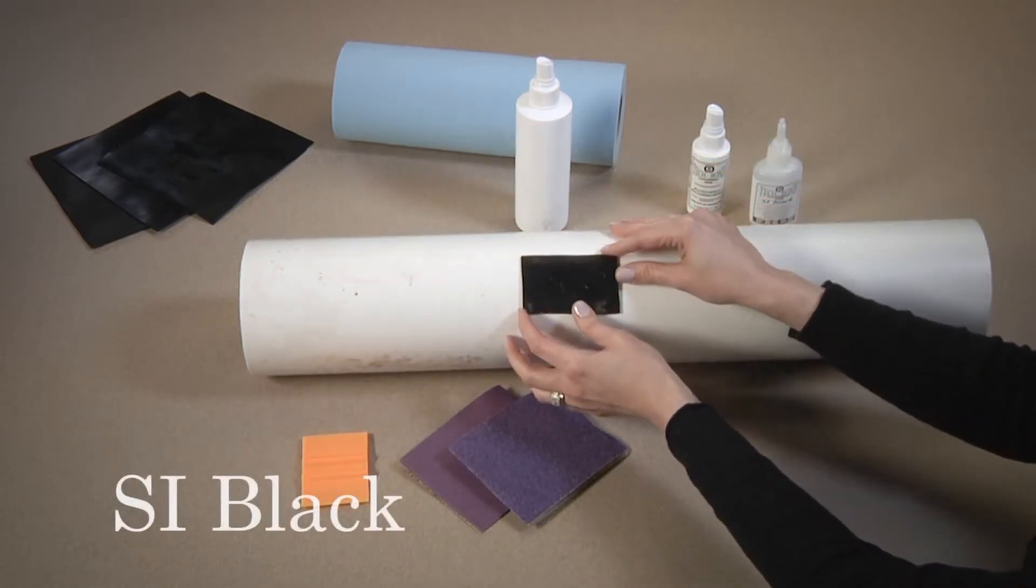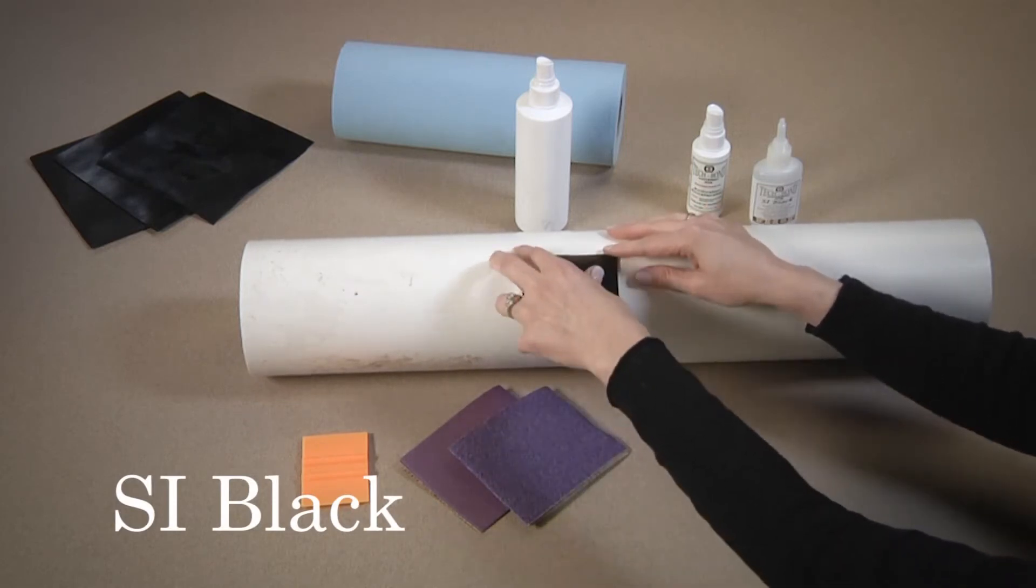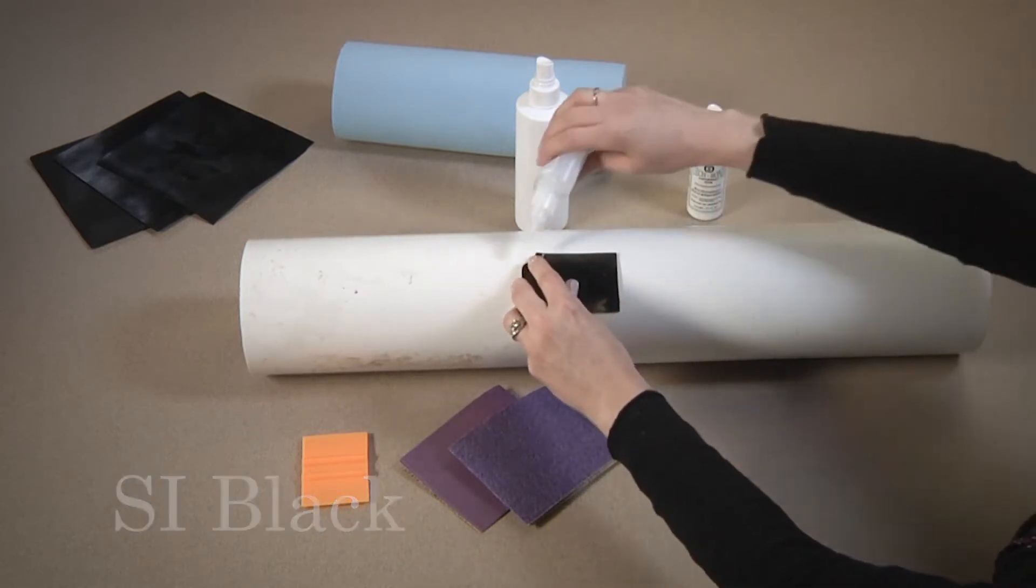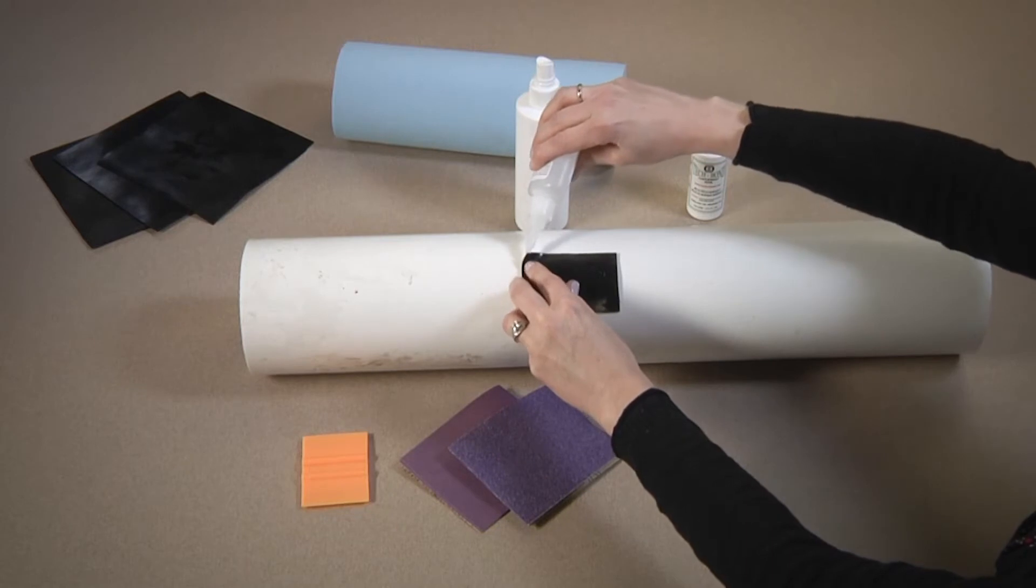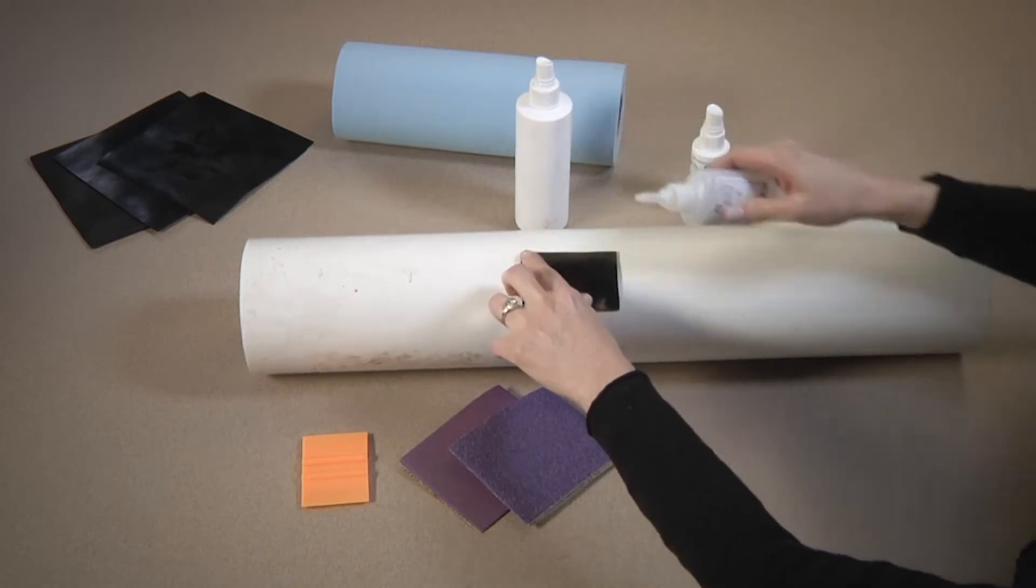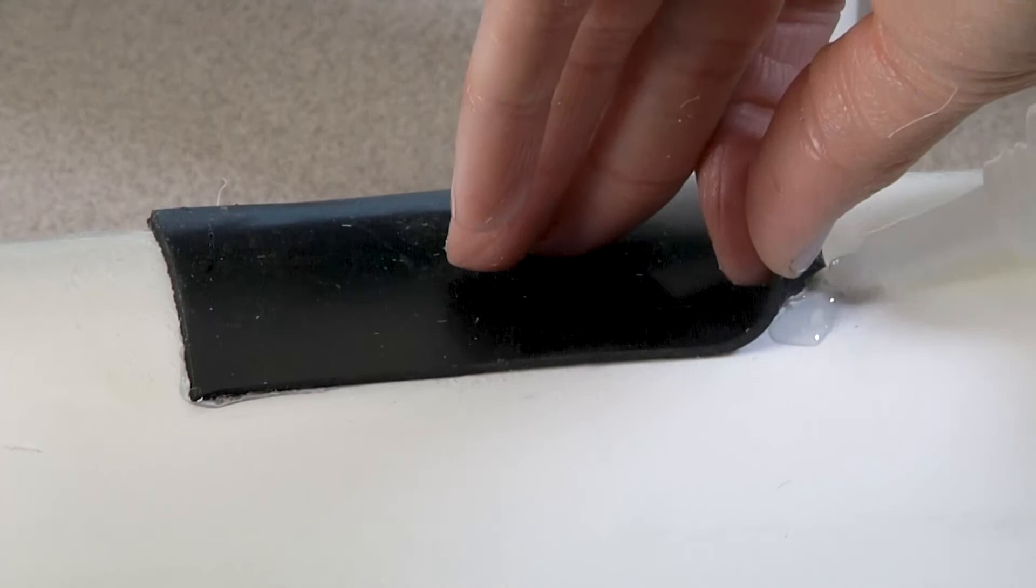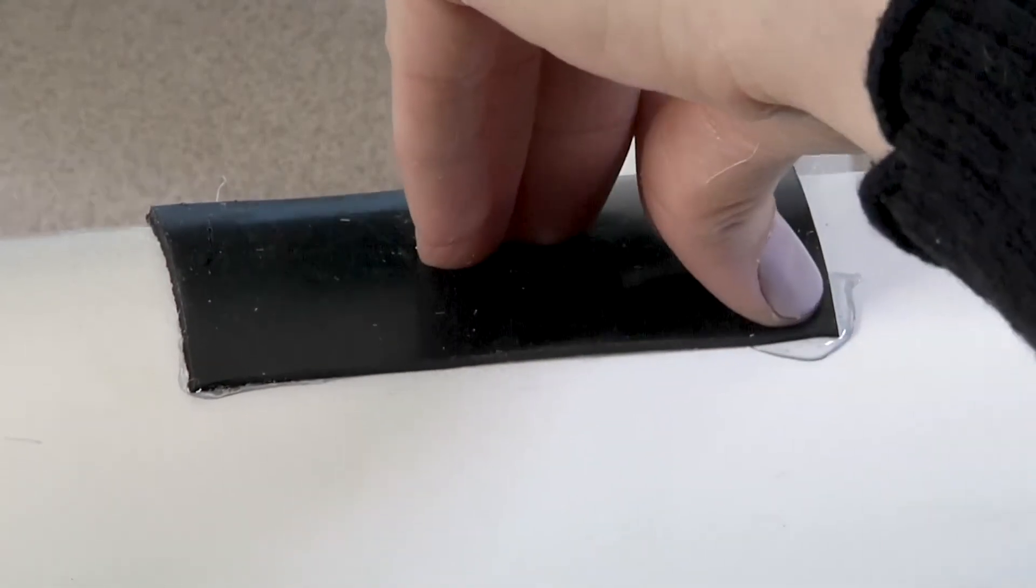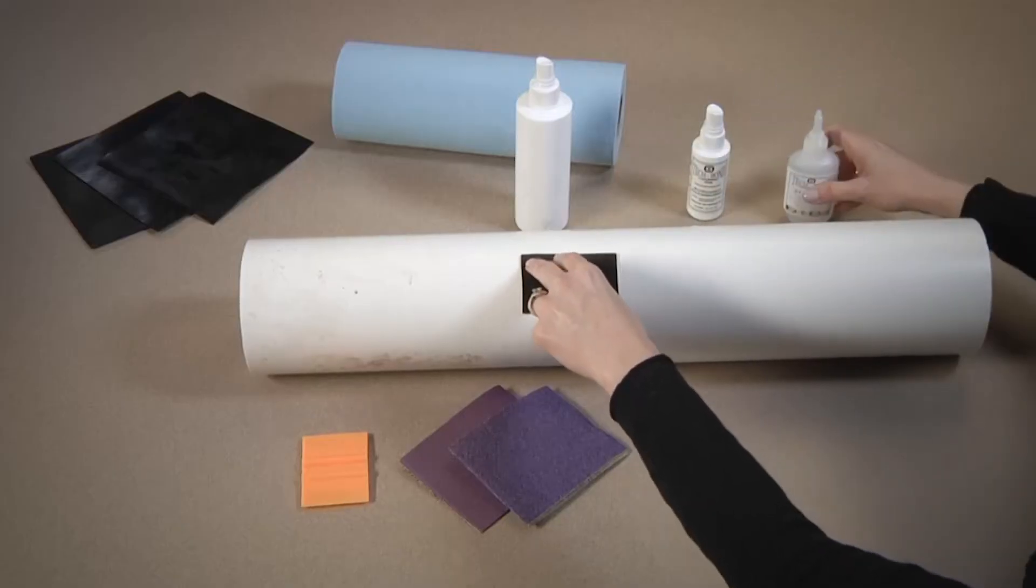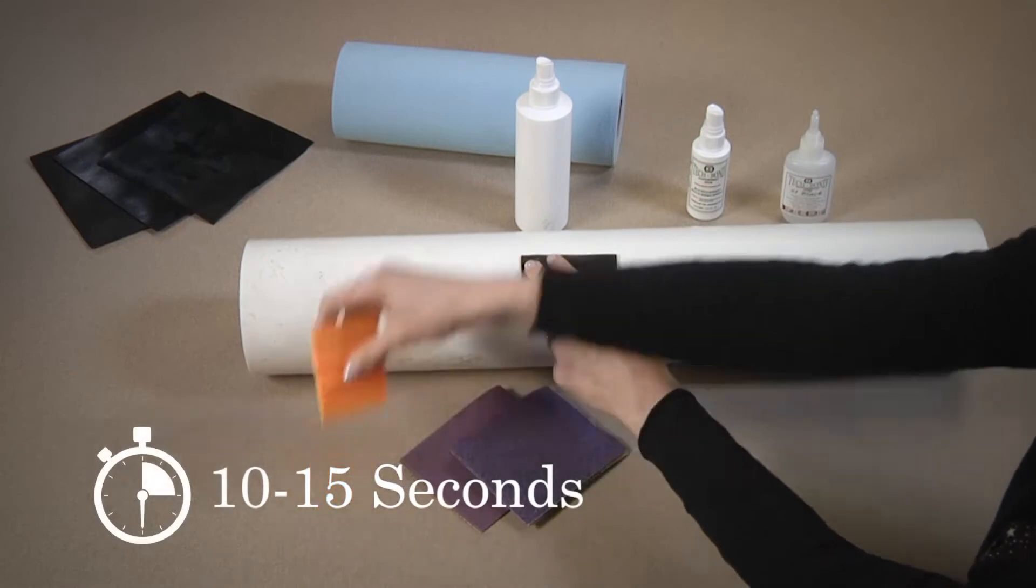Now we can apply SI Black under the two opposite corners that we left open before. And use the squeegee to press down those corners as well.